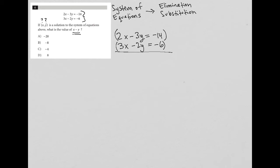If I want to get rid of X, I can't right now because I have a 2X and a 3X. When I add those two things together, I get a 5X. However, if I multiply the entire first equation by positive 3 and I multiply the entire second equation by negative 2, let's see what happens.